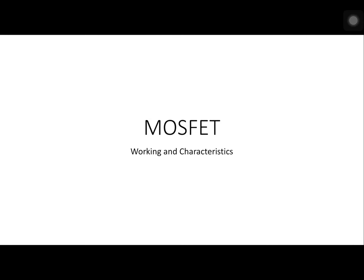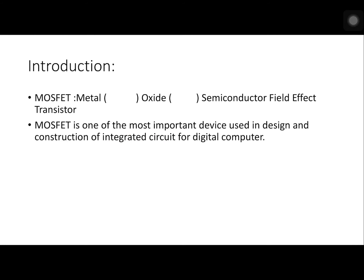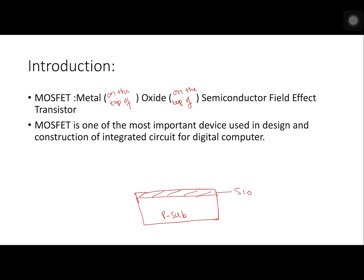Hello friends, welcome to my YouTube channel. Today we are going to discuss MOSFET. MOSFET stands for Metal Oxide Semiconductor Field Effect Transistor. The basic structure is: we have a p-type semiconductor substrate, on top of that an oxide layer SiO2, and on top of the oxide we have metal. That's why the name is Metal Oxide Semiconductor, and this structure is the basic unit used in the design of MOSFET.